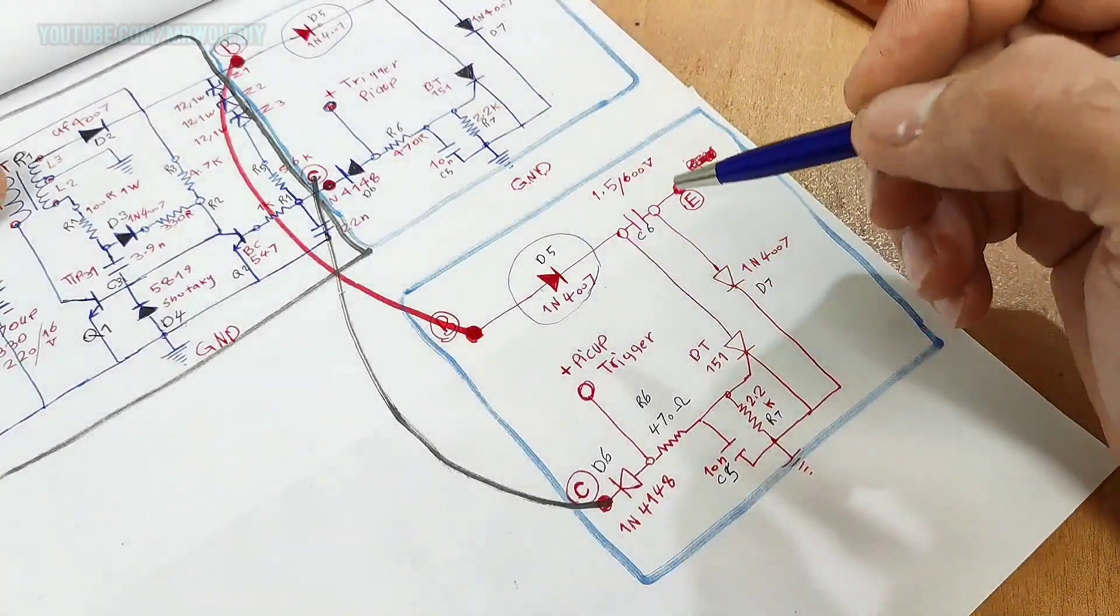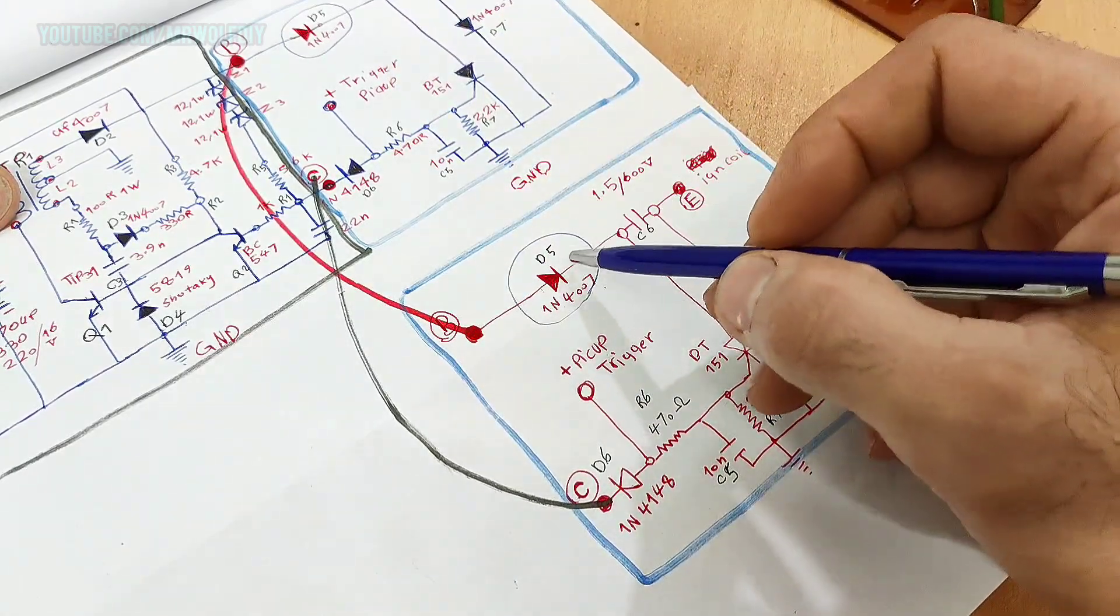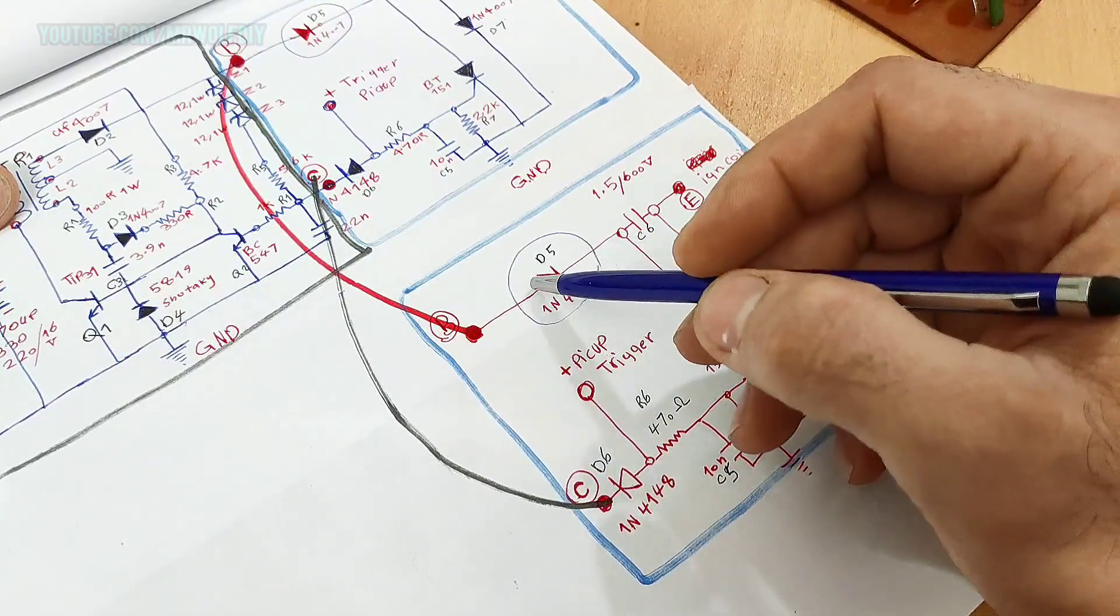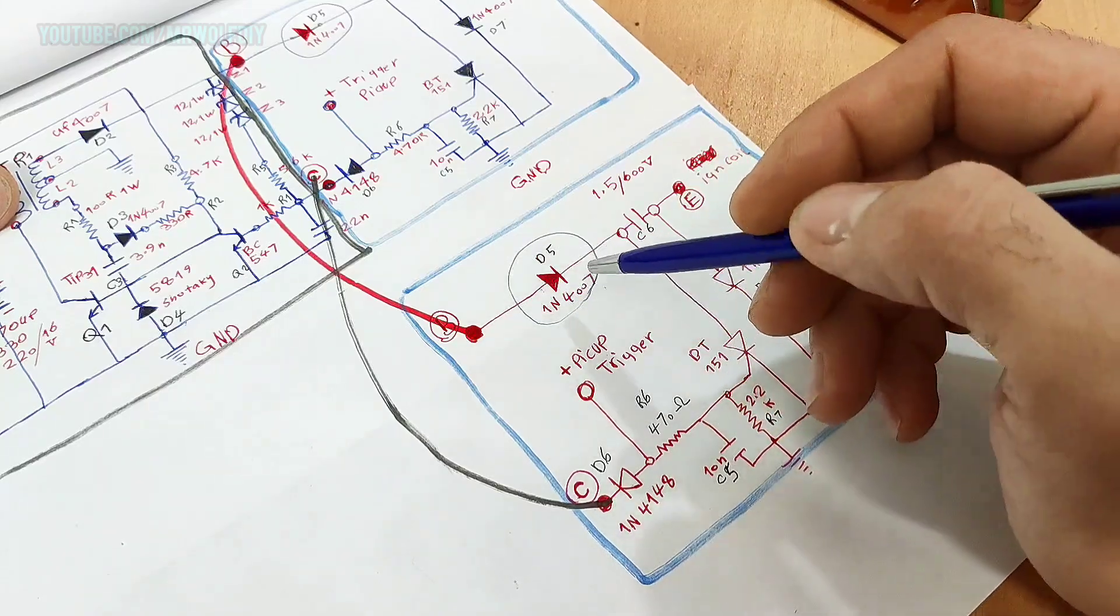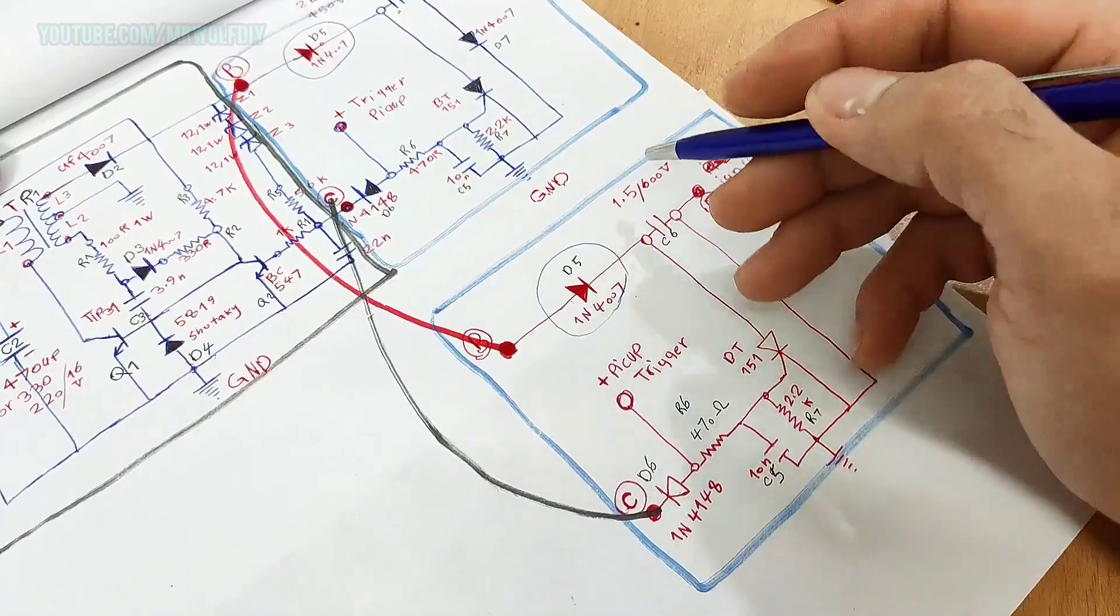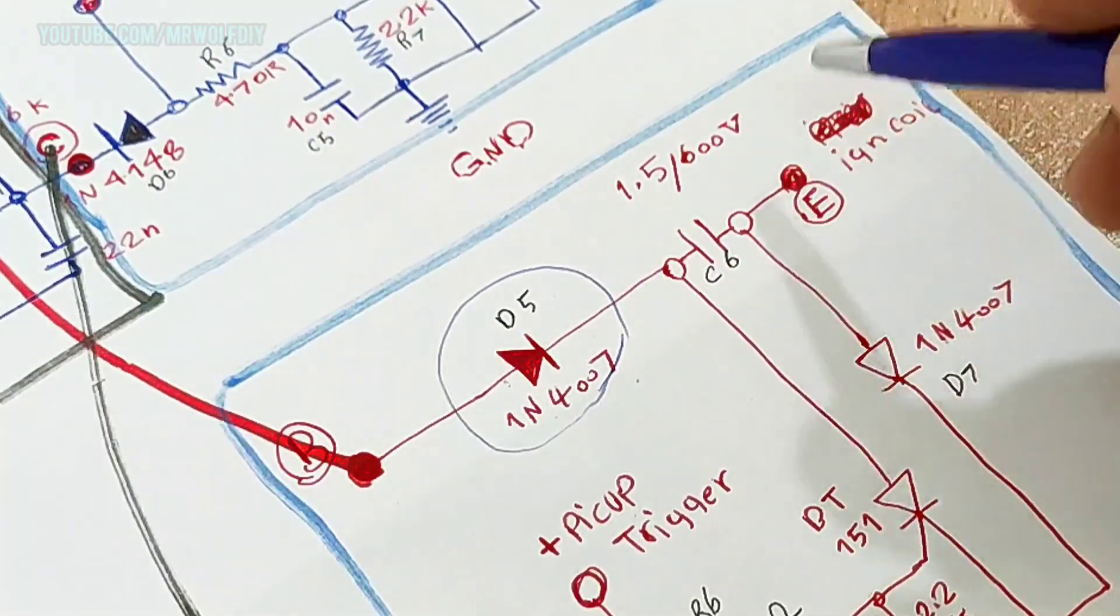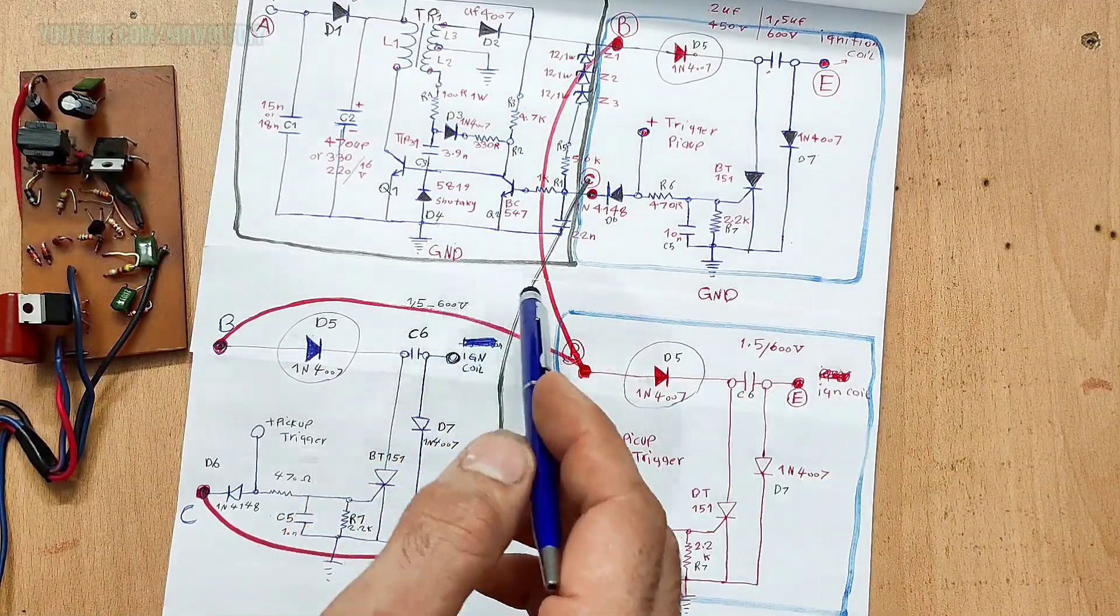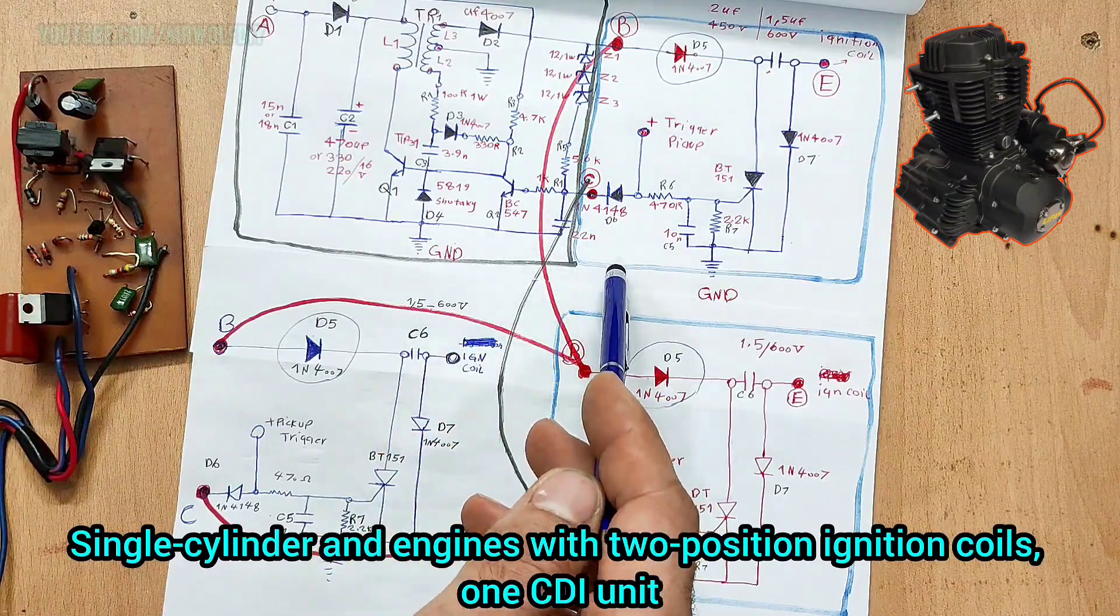To use multiple units, more than two, a diode 1N4007 must be added to the CDI unit in each part, here and here. This diode is for isolating capacitor C6.